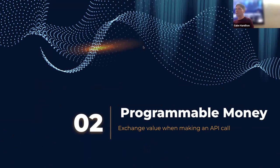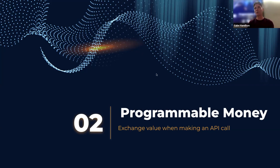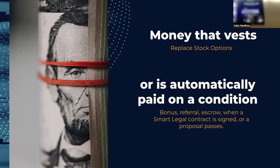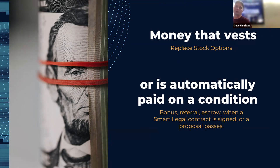Another great thing about smart contracts is programmable money — it's really interesting to be able to encode in that dollar bill what's going to happen. You can exchange value when making an API call. For example, it's money that vests — that unlocks. You could replace stock options with that. Stock options unlock every month people work at a place normally. So you can do that with money: your money is locked up, it's yours, unlocking every month. That has great benefits because then it's fungible — you can go ahead and sell it right away, because it's money instead of the weird thing that a stock option is.